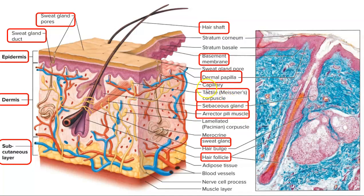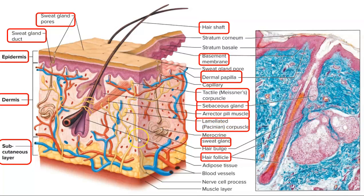Let's look at the tactile, or Meissner's, corpuscle. That's located in the dermis in the dermal papilla and responds to light touch. Then we have the lamellated, or Pacinian, corpuscle, which responds to deep pressure — and you can see that's deeper within the dermis.